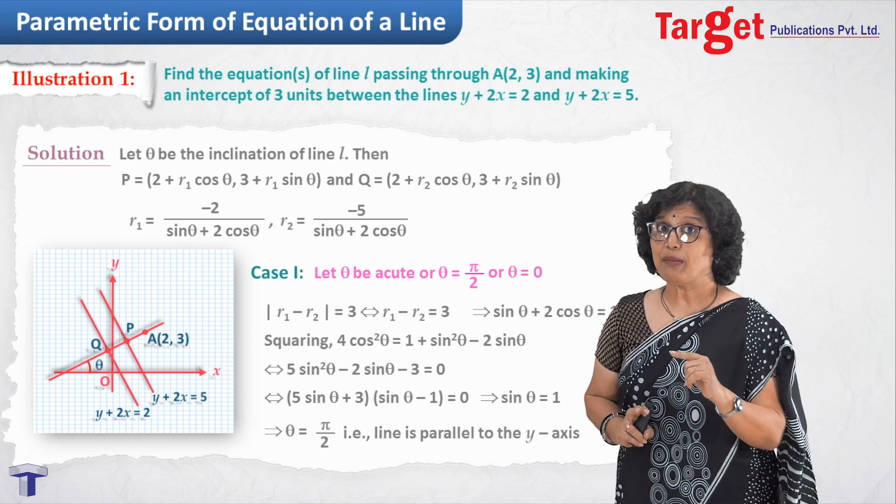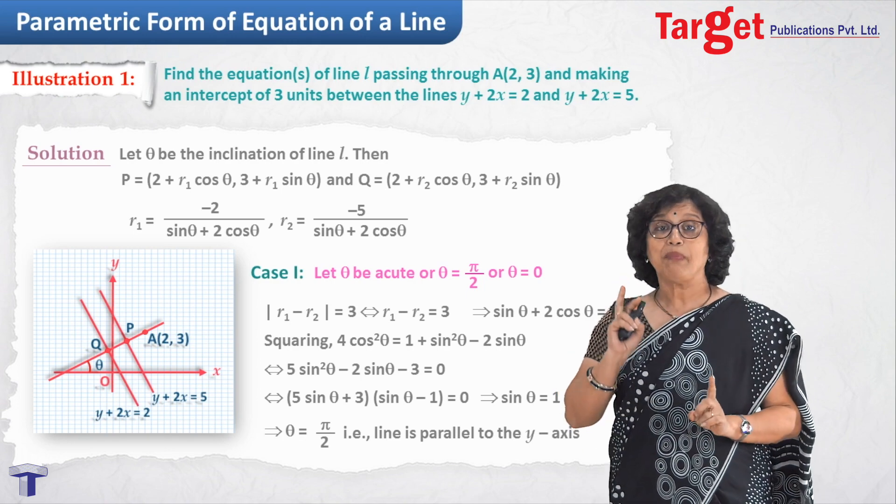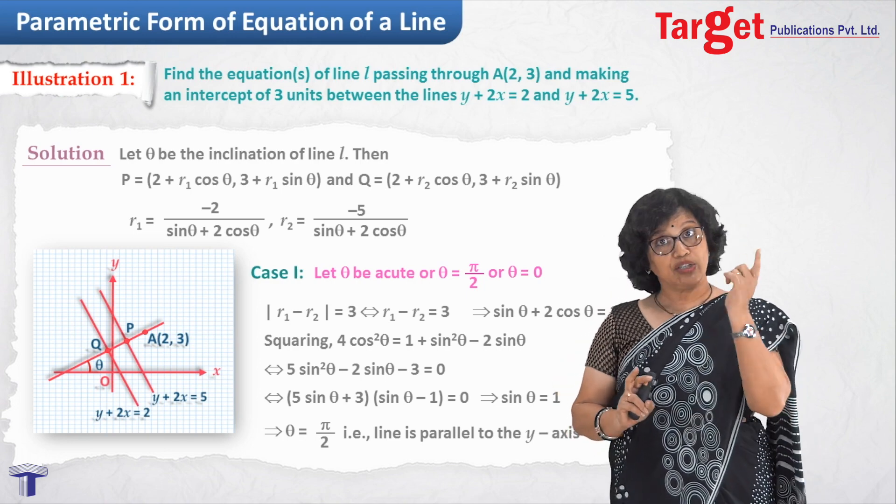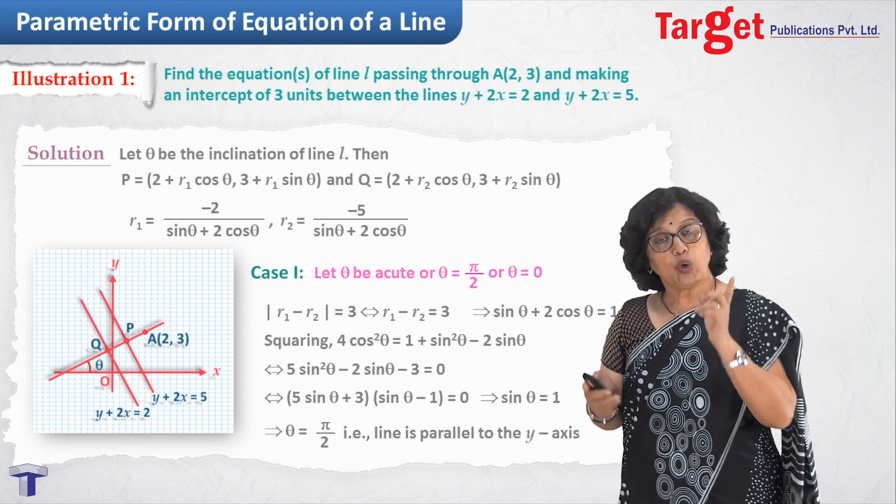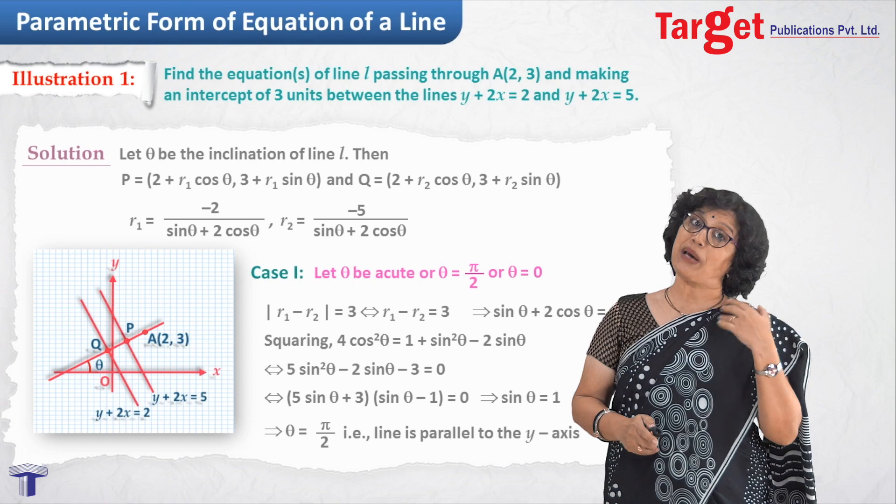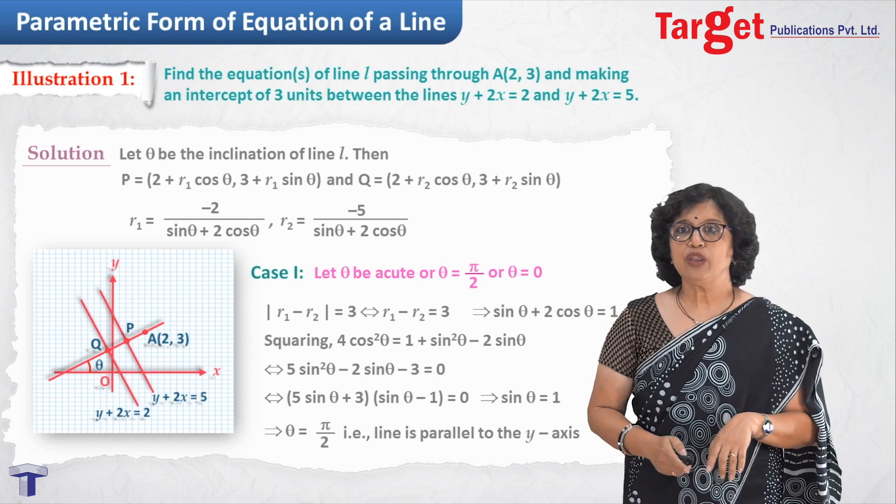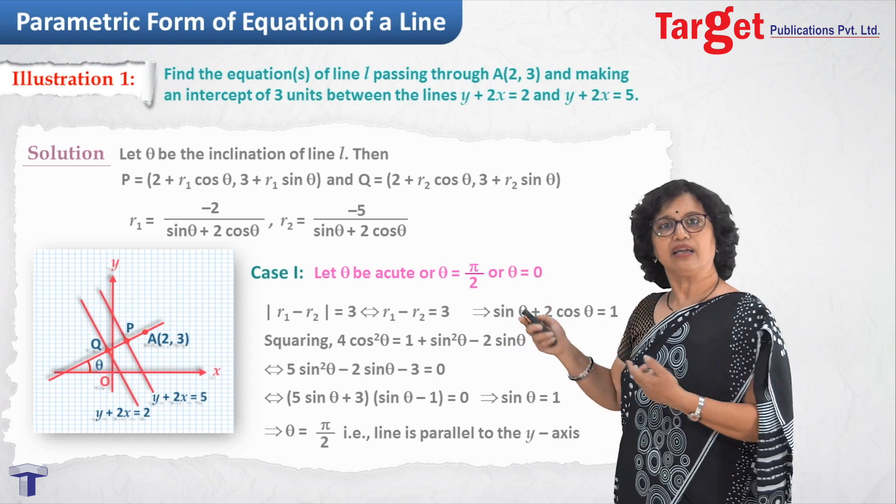The moment you say theta equal to pi by 2, that means that line must be parallel to y axis. This possibility generally is ruled out if you go by any other standard method. So, one possibility is that line is parallel to y axis. Now, this is only when I have taken theta acute. There is one more case. Theta could be obtuse also.